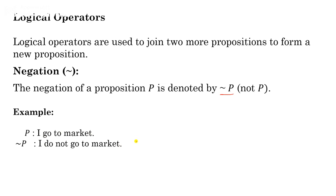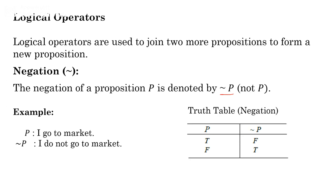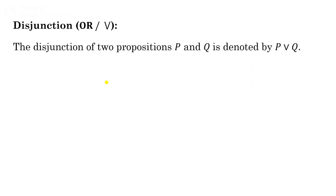In generalized form, every proposition has two truth values: true and false. We can define the truth values of ¬p using a truth table. When p is true, ¬p is false; and when p is false, ¬p is true. This is the truth table for negation. Another logical operator is disjunction, also called 'or.' The symbol for disjunction is ∨, and the disjunction of two propositions p and q is denoted p ∨ q.